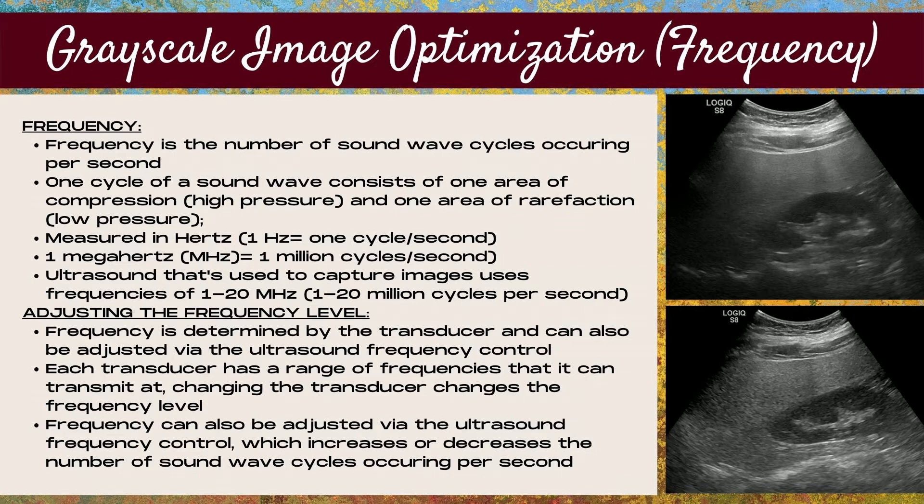Now let's talk about adjusting the frequency level. Frequency is determined by the transducer and can also be adjusted via the ultrasound frequency control. Each transducer has a range of frequencies that it can transmit at. Changing the transducer changes the frequency level, and the frequency can also be adjusted via the frequency control, which increases or decreases the number of sound wave cycles per second.